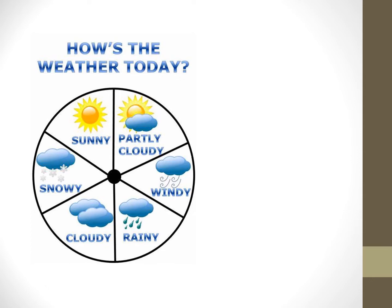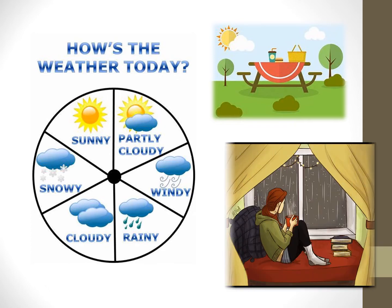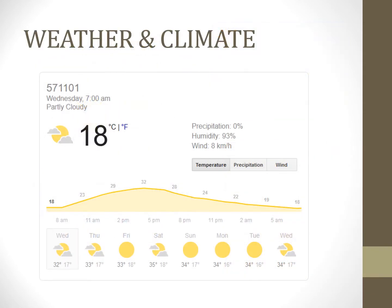One of the first things we probably do every morning is look out to see what the weather is like. A bright, sunny day might make us think of going on a picnic. On a rainy day, we might feel lazy to work and crave for something hot and spicy to eat. The weather affects us in many ways. The term weather refers to the day-to-day state of the atmosphere, whereas the averaging of atmospheric conditions over longer periods of time is termed as climate.